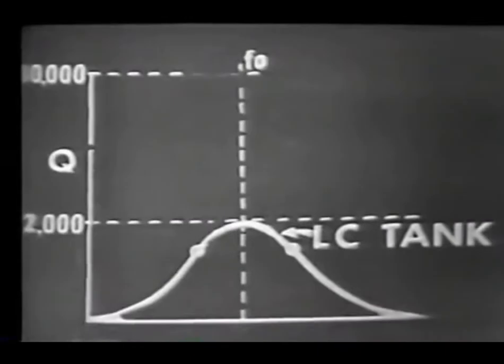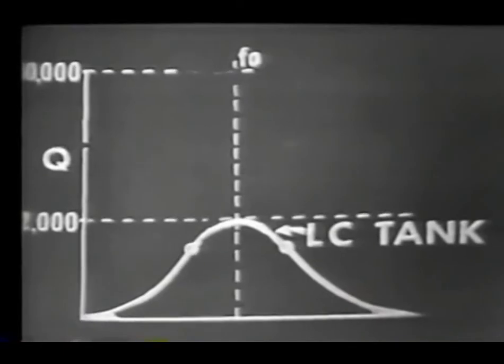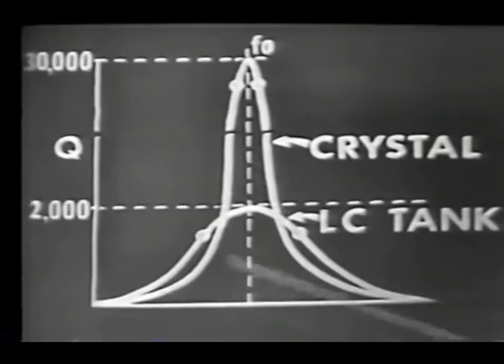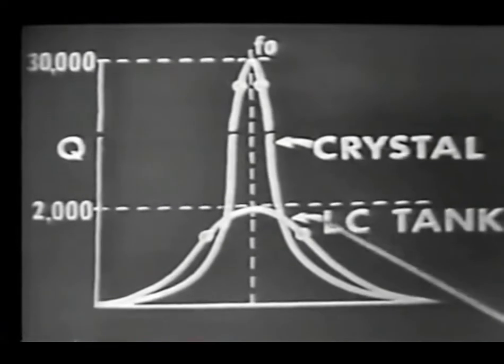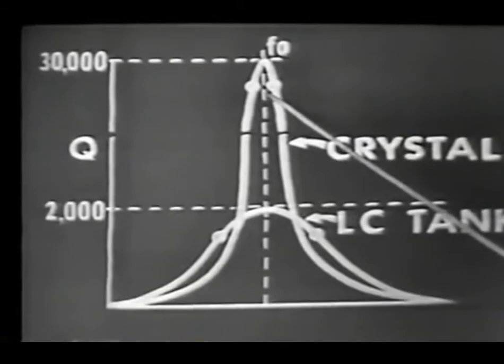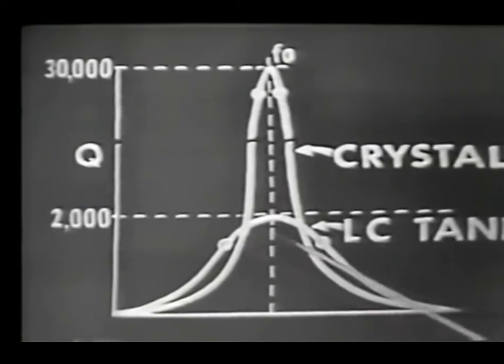Just because this vibrating crystal is equivalent to a series LC tank circuit, don't think that it's the same thing — because the crystal will be far superior. The Q of the crystal circuit is many times greater than that of the LC circuit. The Q of an LC tank circuit is seldom greater than 2,000, whereas the Q of a crystal is sometimes as great as 30,000. Because of the high Q, the crystal has better frequency stability because its bandwidth is much more narrow than that of the LC tank circuit.